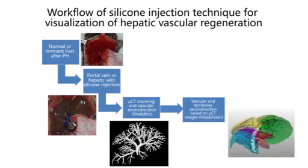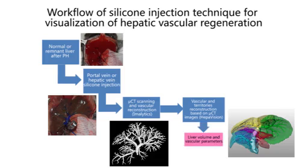HEPAVision is a program used in clinics for planning hepatobiliary surgery. In addition to the 3D visualization of the vascular tree, this program allows visualization and calculation of the liver volume — of the total liver and each lobe — based on the supplying and draining vessels.